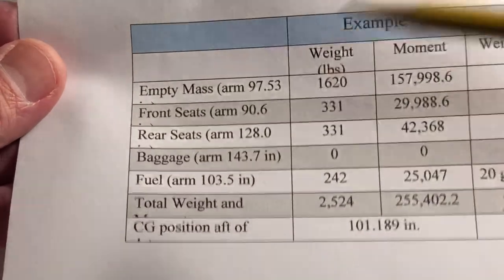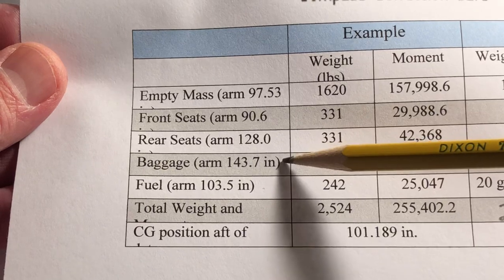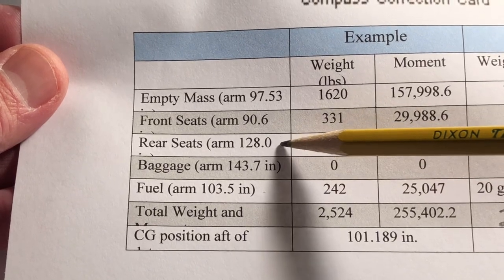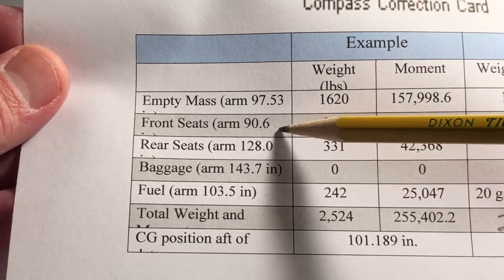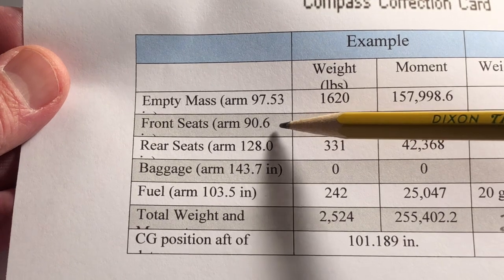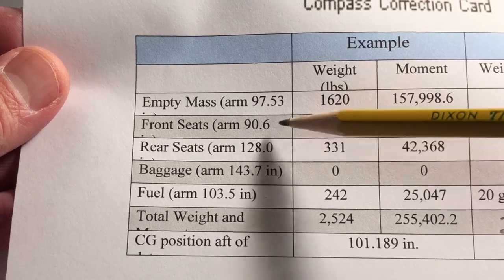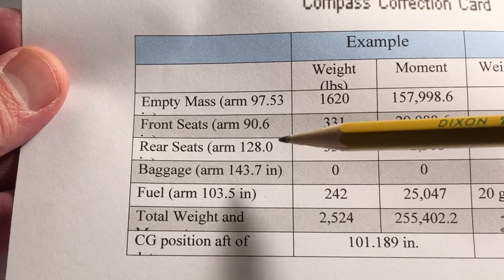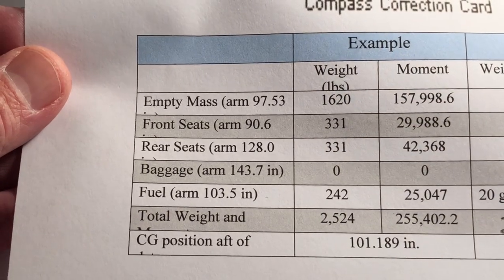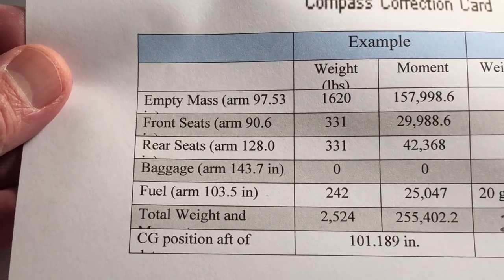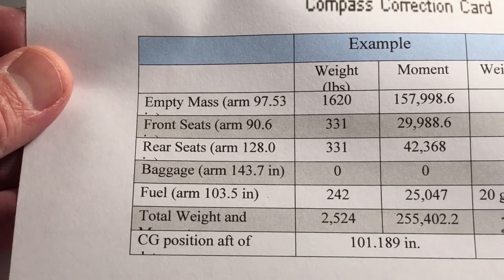If we're moving something from the rear seat to the front seat, we're going from an arm of 128.0 to 90.6. So we're actually subtracting from our arm. So 128 minus 90.6 is 37.4.